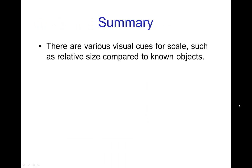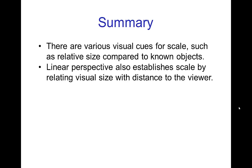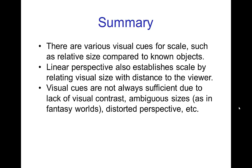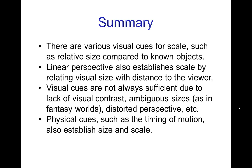In summary, there are various visual cues for scale, such as relative size compared to known objects. Linear perspective also establishes scale by connecting visual size with distance to the viewer. However, visual cues are not always sufficient to successfully establish scale because of problems such as lack of visual contrast, ambiguous sizes especially in fantasy worlds, and the issue of distorted perspective. So there are also physical cues that give us a sense of size and scale — some of the simplest being the timing of motion — and we'll see many others in the next few tutorials.